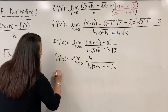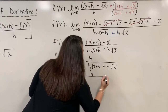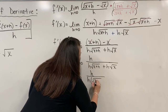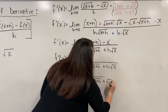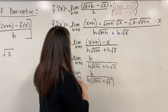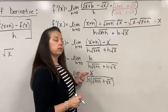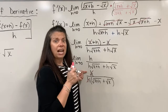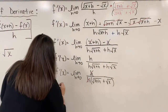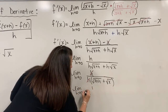When I factor out the h, I have f prime of x equals the limit as h approaches zero, still with h in the numerator, and the denominator looks like h times the quantity square root of x plus h plus square root of x. Then the h in the numerator divides out with the h in the denominator. Even though it appears there's nothing left in the numerator, there is still a one there. So I have f prime of x equals the limit as h approaches zero of one divided by square root of x plus h plus square root of x.